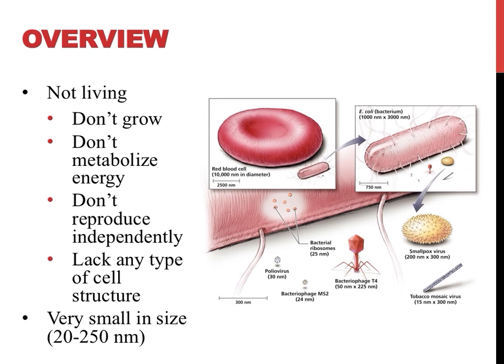Viruses are very small. We have talked about eukaryotic and prokaryotic cells already. The picture on this slide shows how the three compare in size. Eukaryotic cells can be hundreds or thousands of times larger than prokaryotic cells. A red blood cell next to E. coli, which is a rod-shaped bacterium, illustrates this.